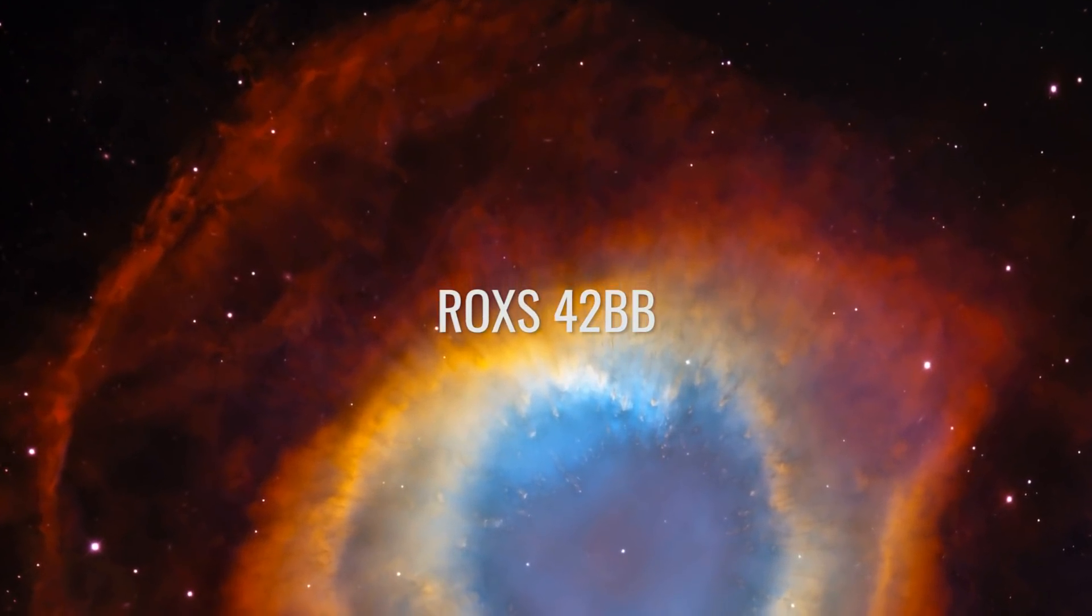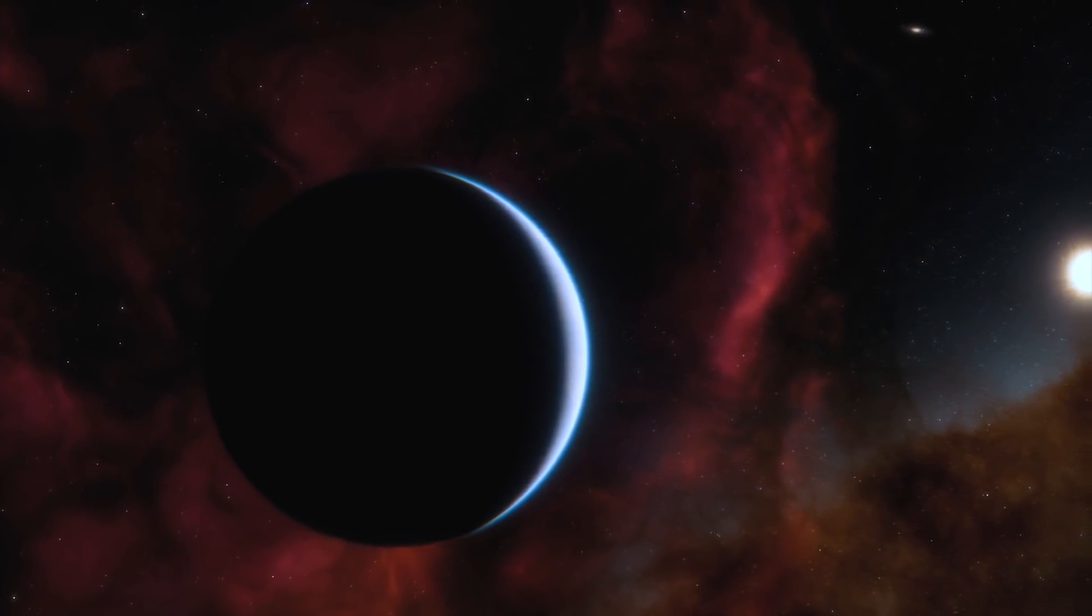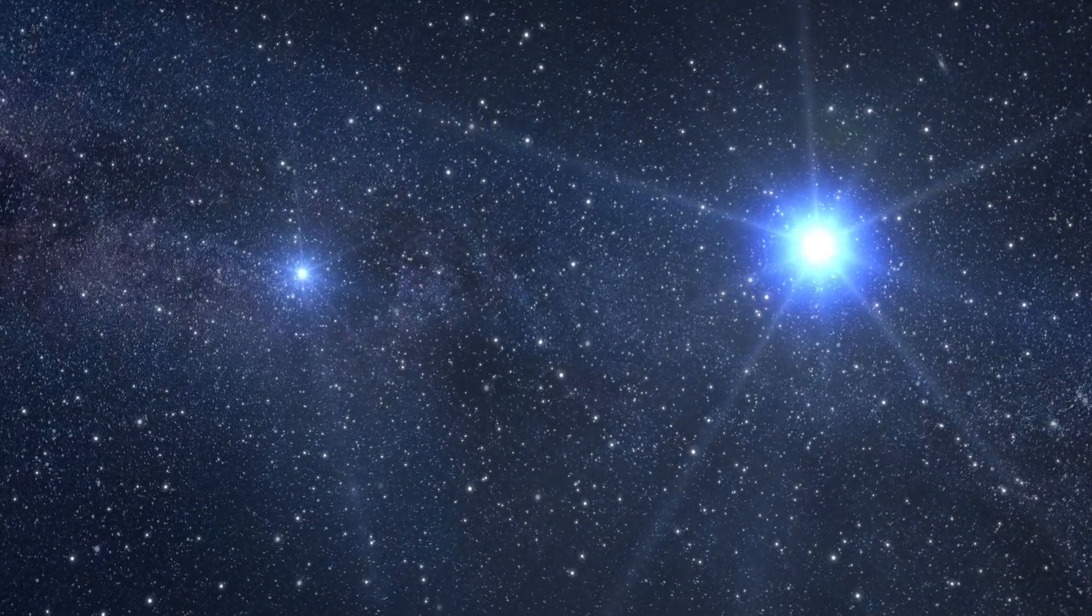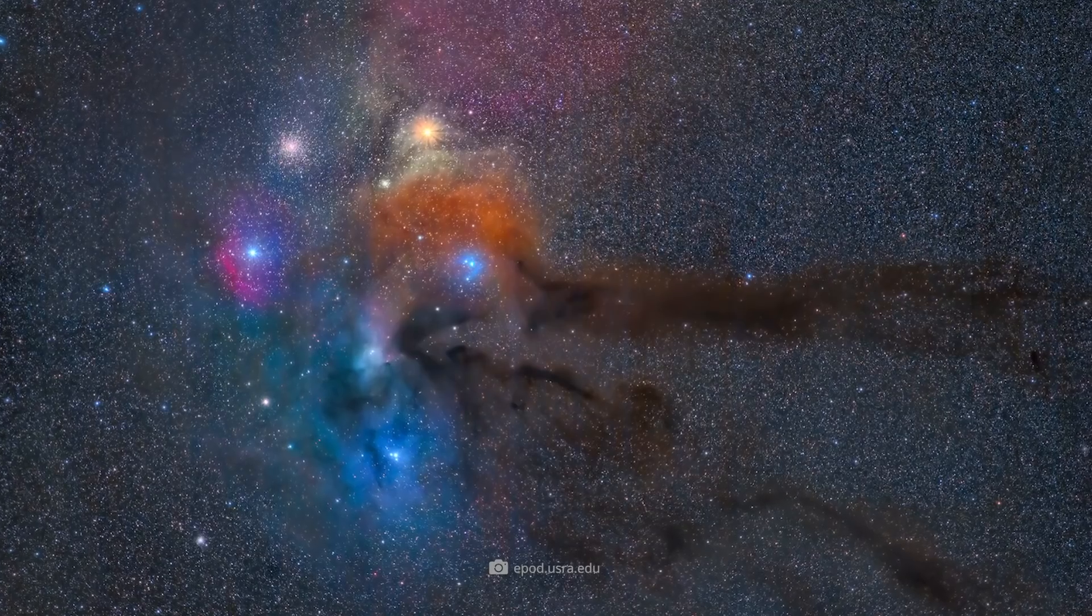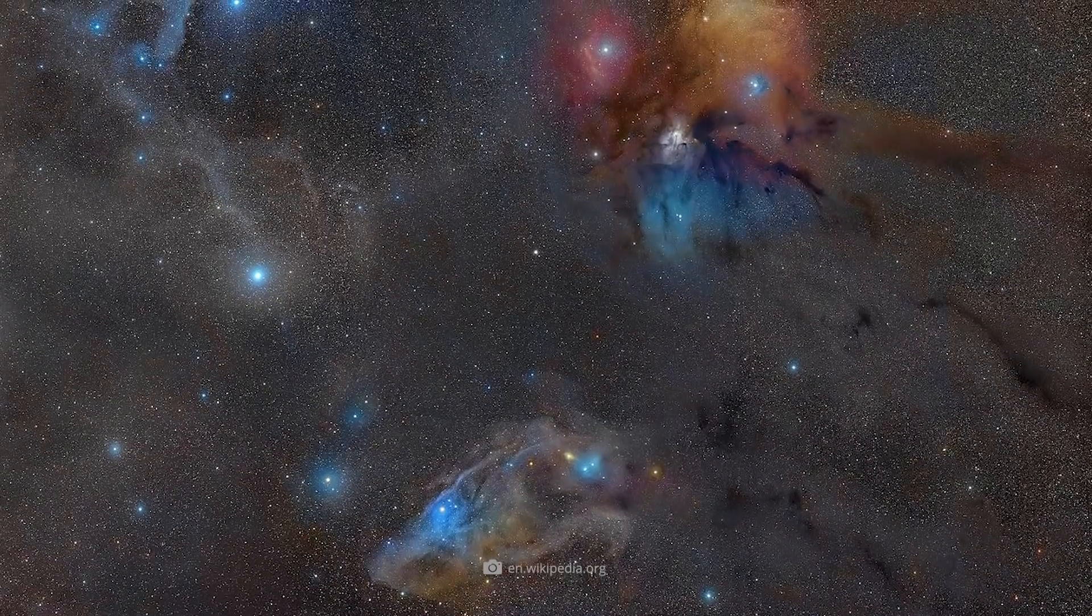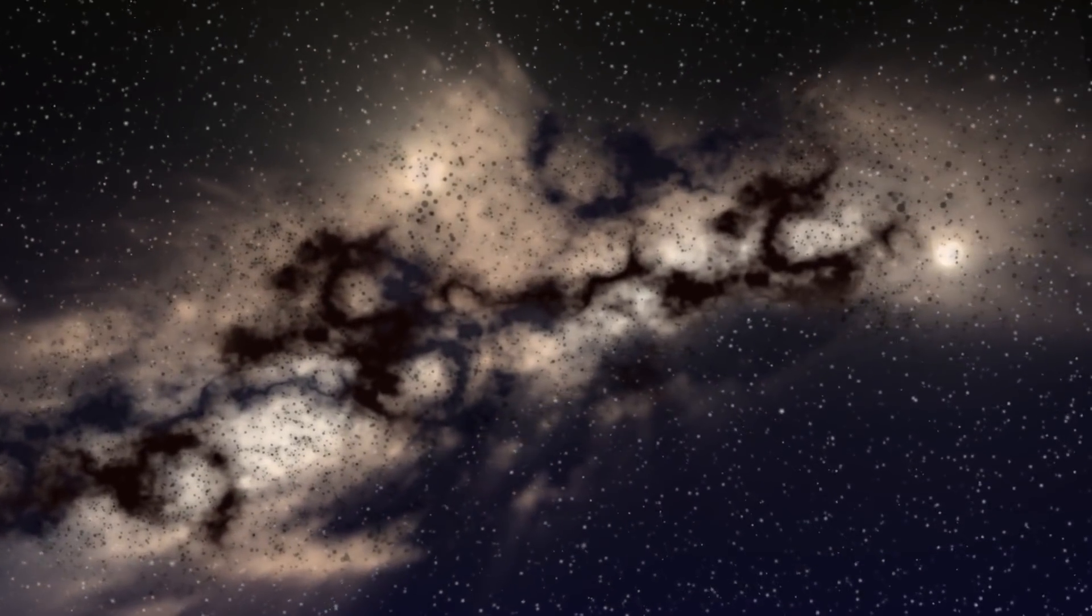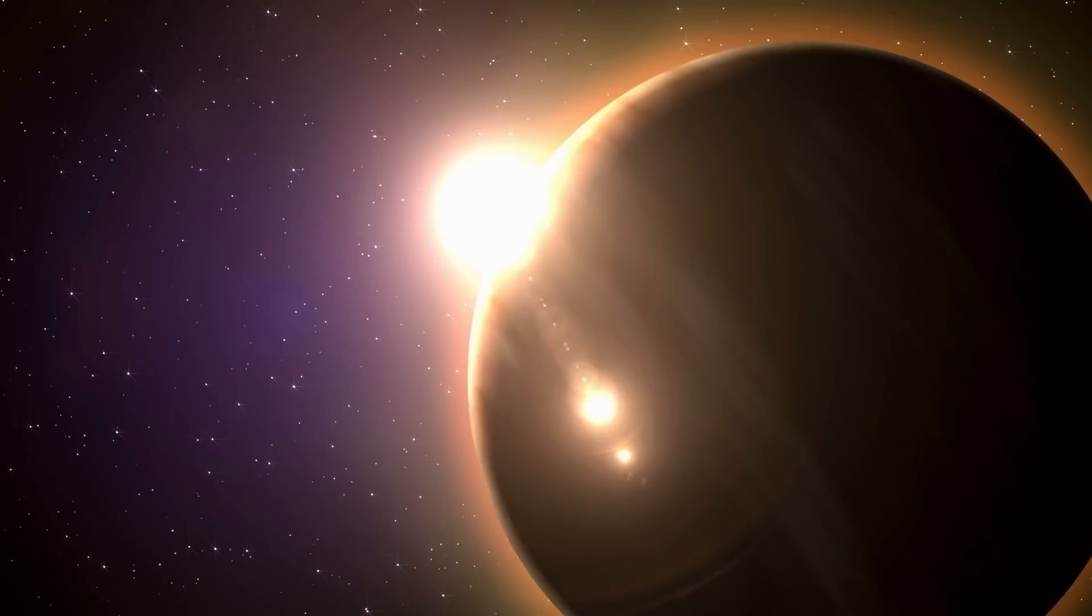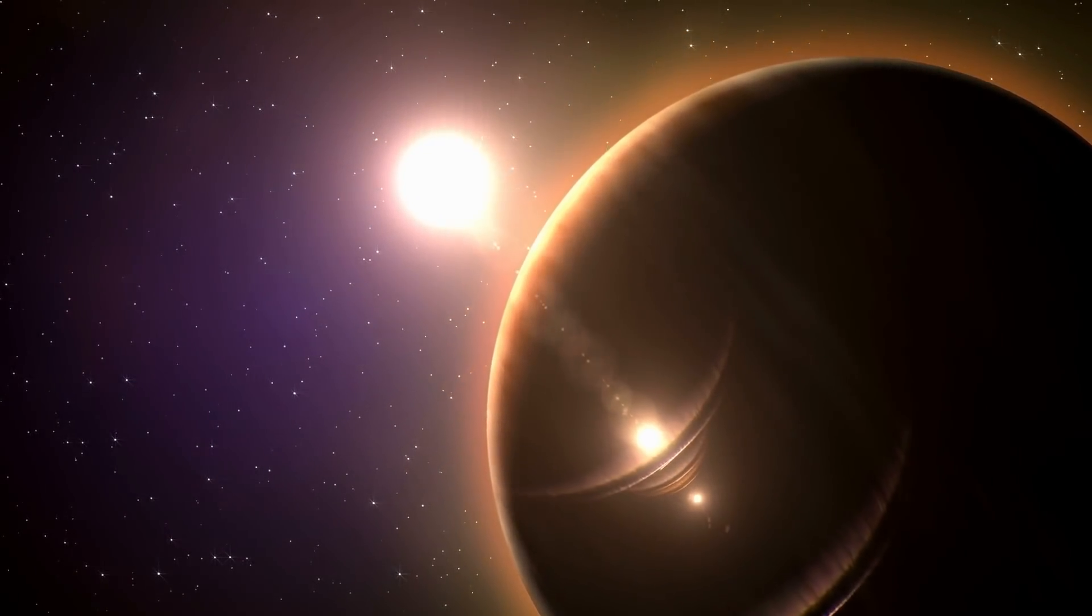ROXS 42BB is another fascinating exoplanet directly imaged during scientific research. The celestial body is the steady companion of the epitomous M double star ROXS 42BB, which is most likely part of the cloud complex Rho-Ofeuchi. This in turn refers to a so-called dark cloud in the constellation of the Serpent Bearer. In astronomy, dark clouds denote large condensations of interstellar matter that absorb light from objects behind them. The exoplanet ROXS 42BB has an estimated mass of about 9 Jupiter masses.